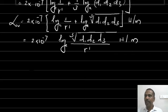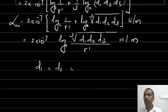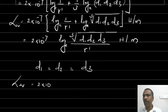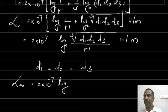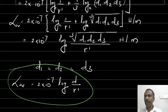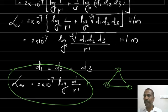Suppose the three lines are equally displaced, that is D1 = D2 = D3 = D. Then the average inductance L = 2 × 10⁻⁷ · log(D/r') henry per meter. The cube root term reduces to D, so it simply becomes log(D/r'). This is for equally displaced conductors — if the three conductors are placed at the corners of an equilateral triangle, this will be the inductance.